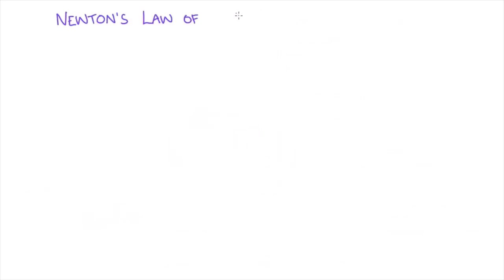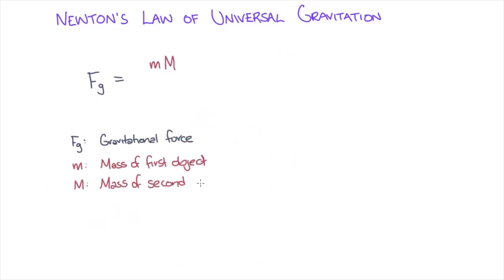Newton's law of universal gravitation is as follows: the gravitational force is equal to the mass of the first object times the mass of the second object. Now we'll divide by distance because increasing the distance tends to decrease